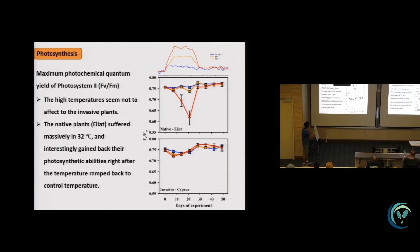But in the native plant, we see that along with the increasing temperatures, the Fv by Fm value was decreasing. And then when we ramped back the temperature to the control temperature 26, it gained back the ability to do photosynthesis.